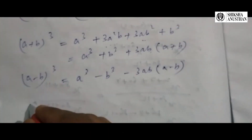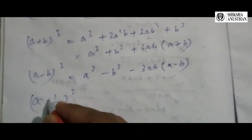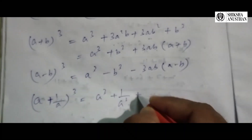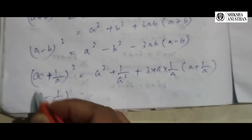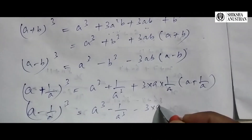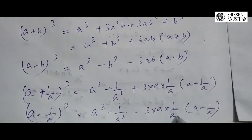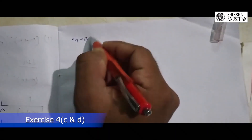Now the fraction part: (a + 1/a) whole cube equals a cube plus 1 by a cube plus 3 into a into 1/a into (a + 1/a) — this simplifies since a times 1/a cancels out. Similarly, (a - 1/a) cube simplifies in the same way.